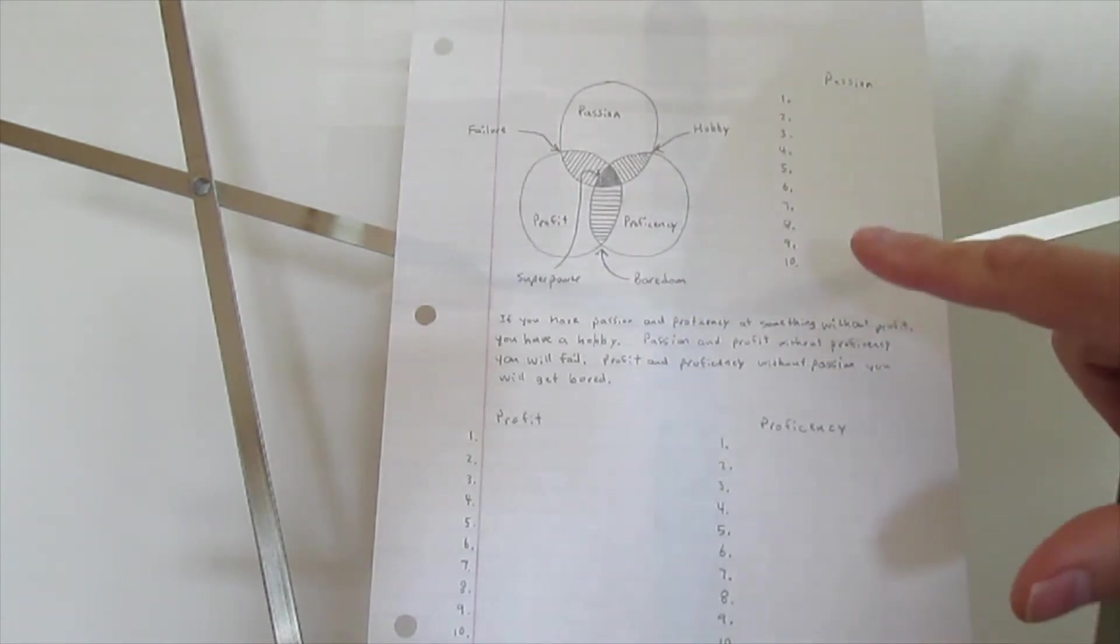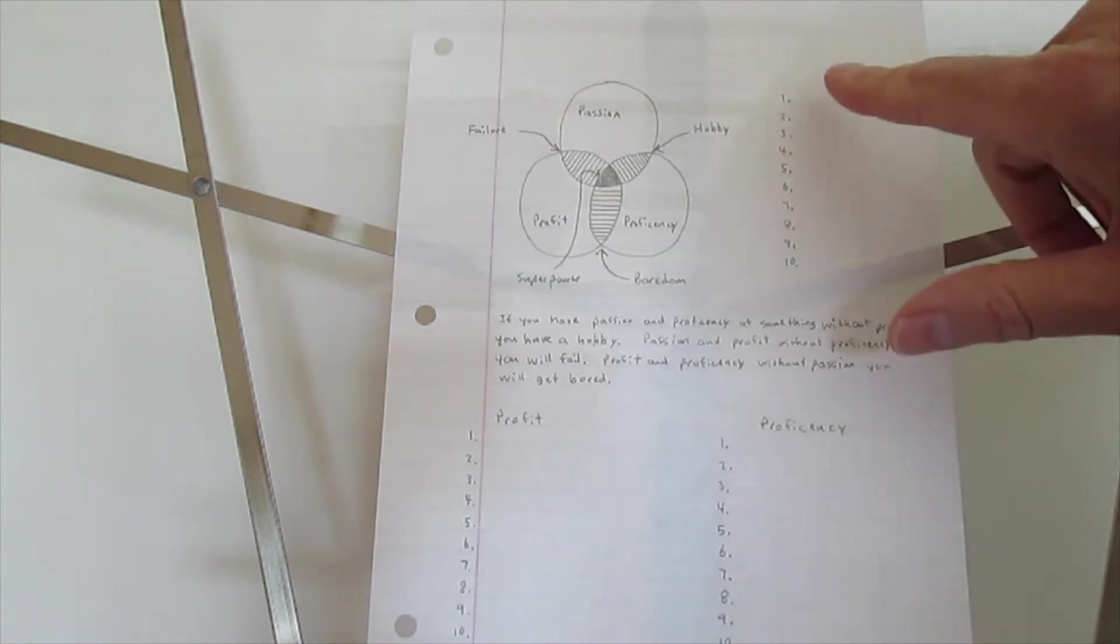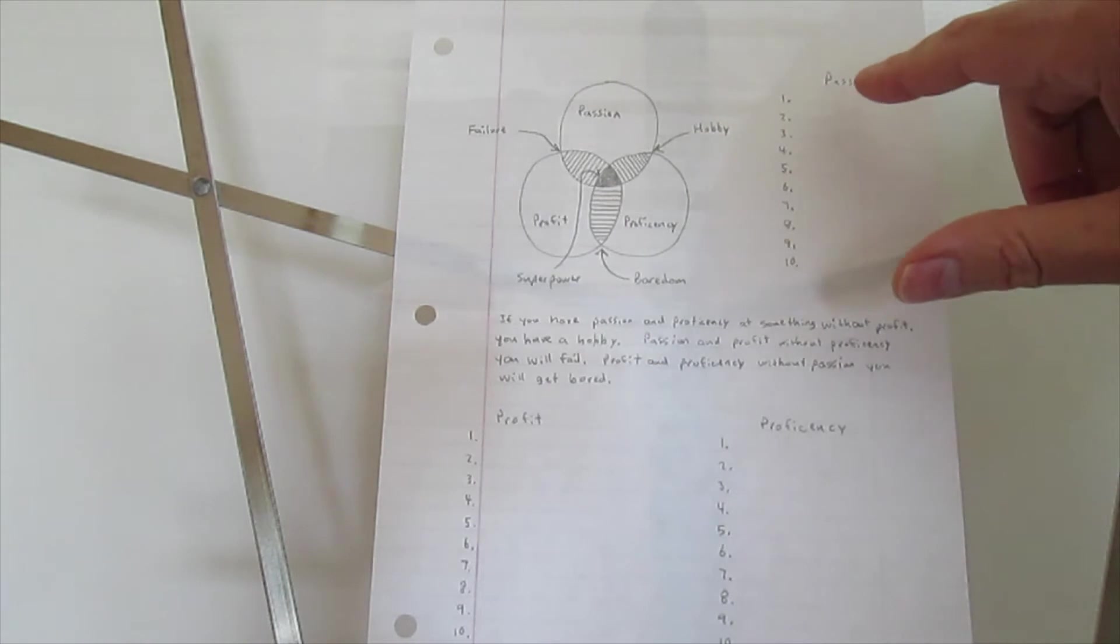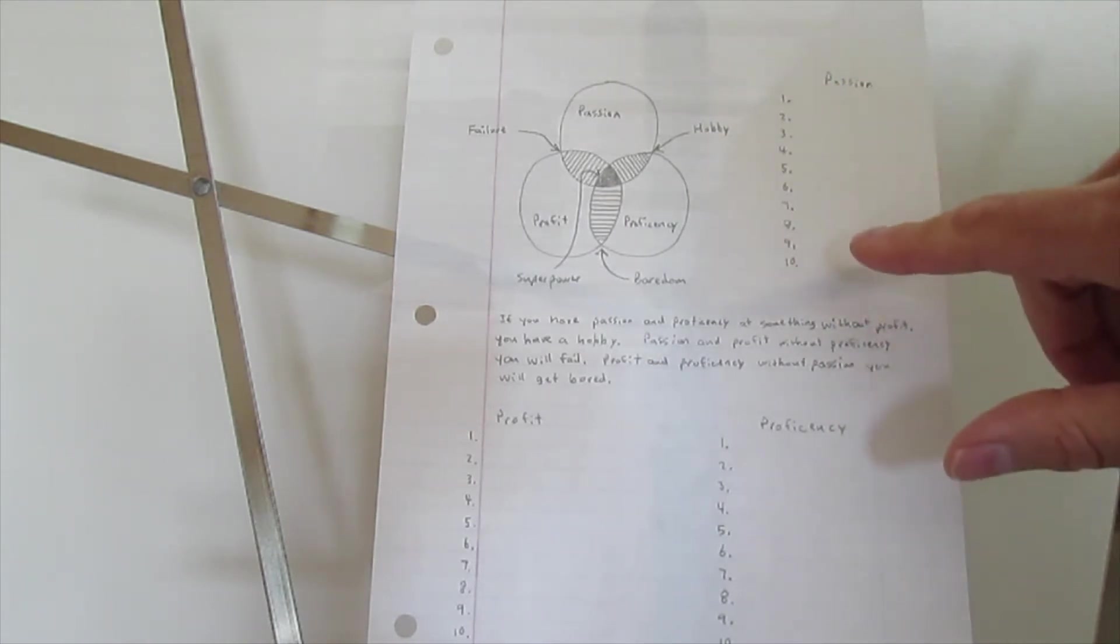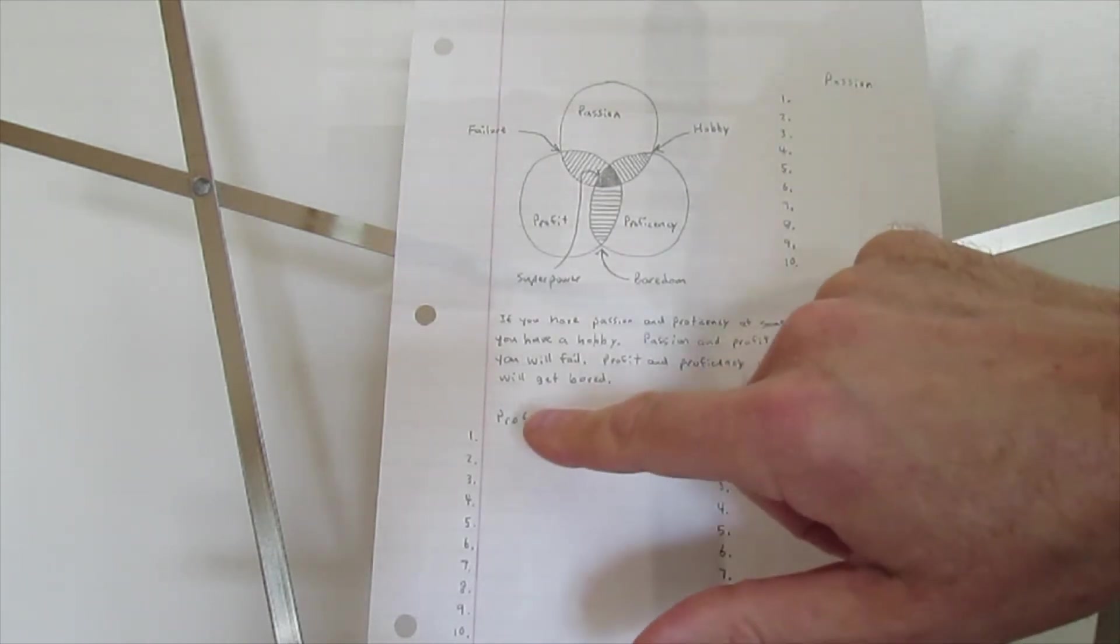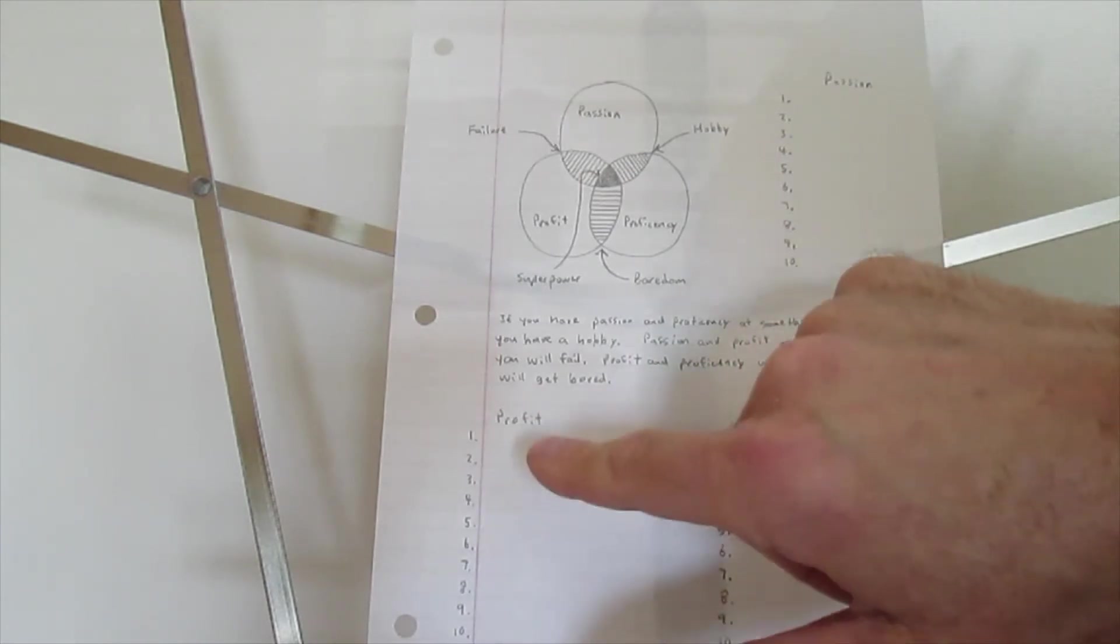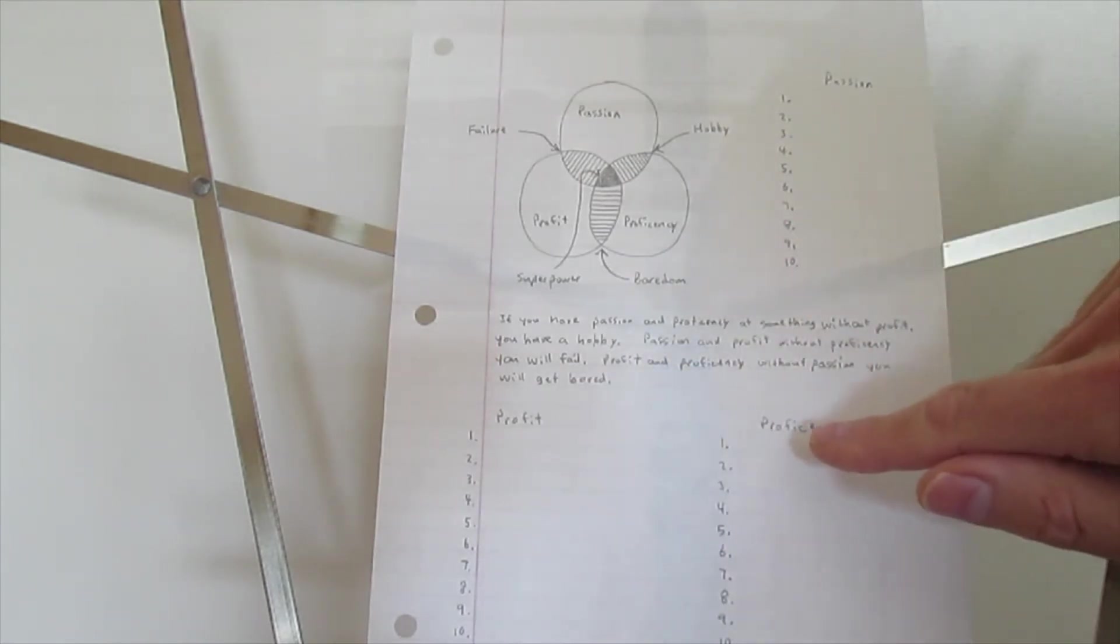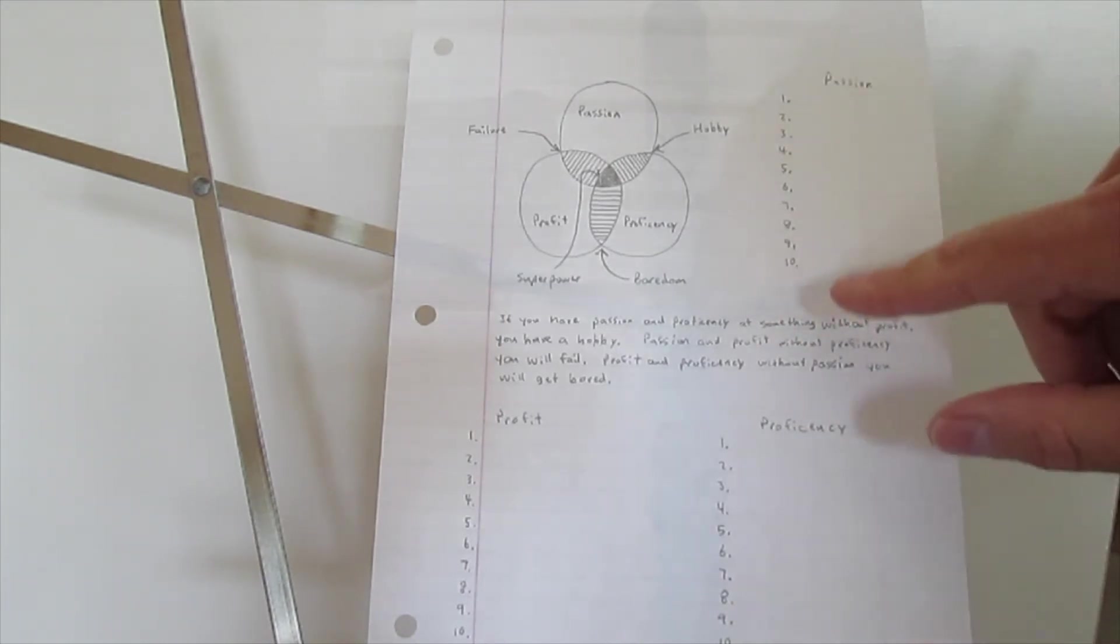What I've done is for passion, I've listed out on another sheet ten things that I'm passionate about doing. Down here, ten things that I can make money doing, and here ten things that I'm proficient at or good at. Once I've listed the ten things, I'll look at the list.